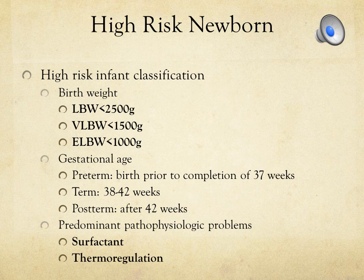When we have preterm babies, one way to classify them is by birth weight. Low birth weight is less than 2,500 grams, very low birth weight is less than 1,500 grams, and extremely low birth weight is less than 1,000 grams. These infants haven't had the opportunity to develop the resources they need or develop physically enough to manage their body's work requirements.